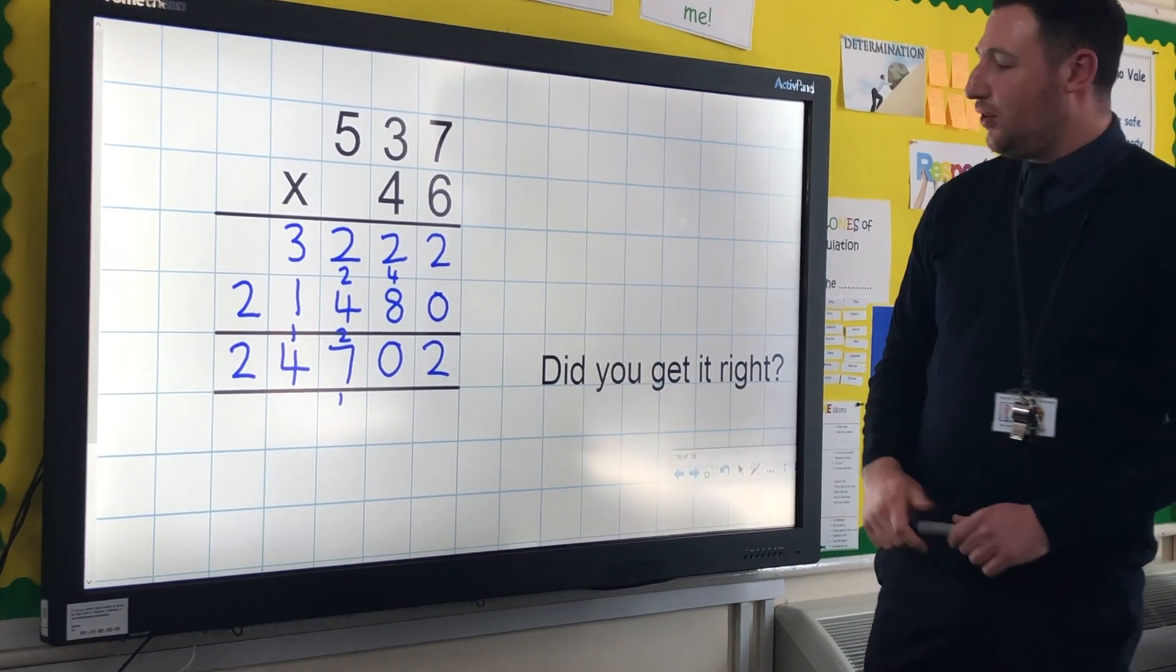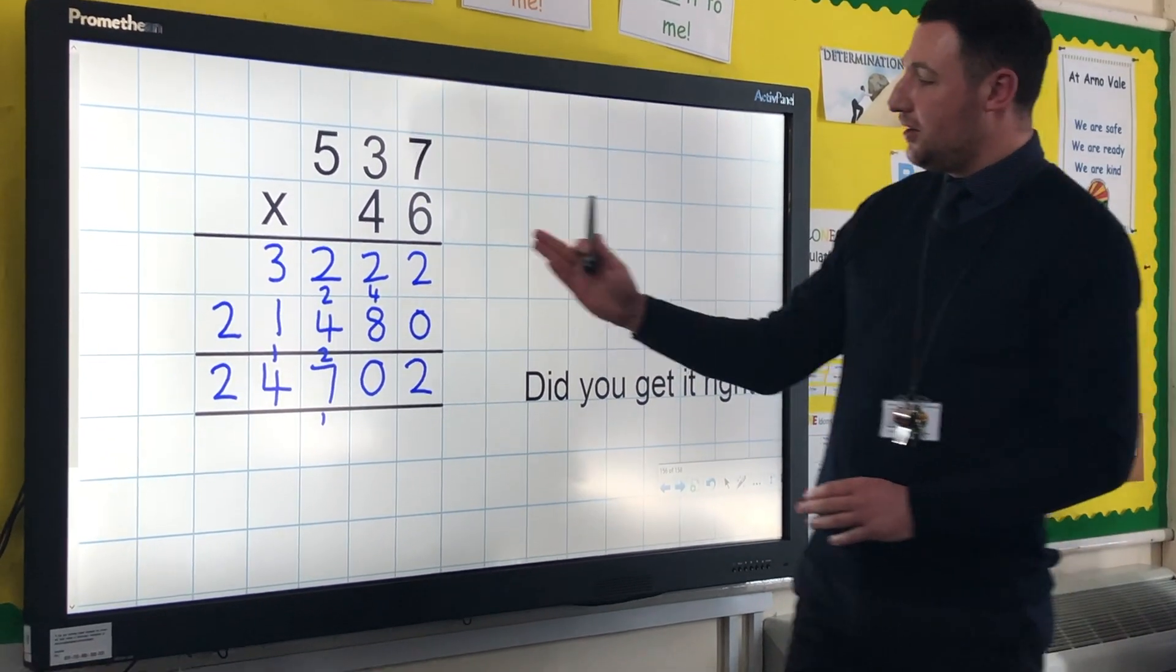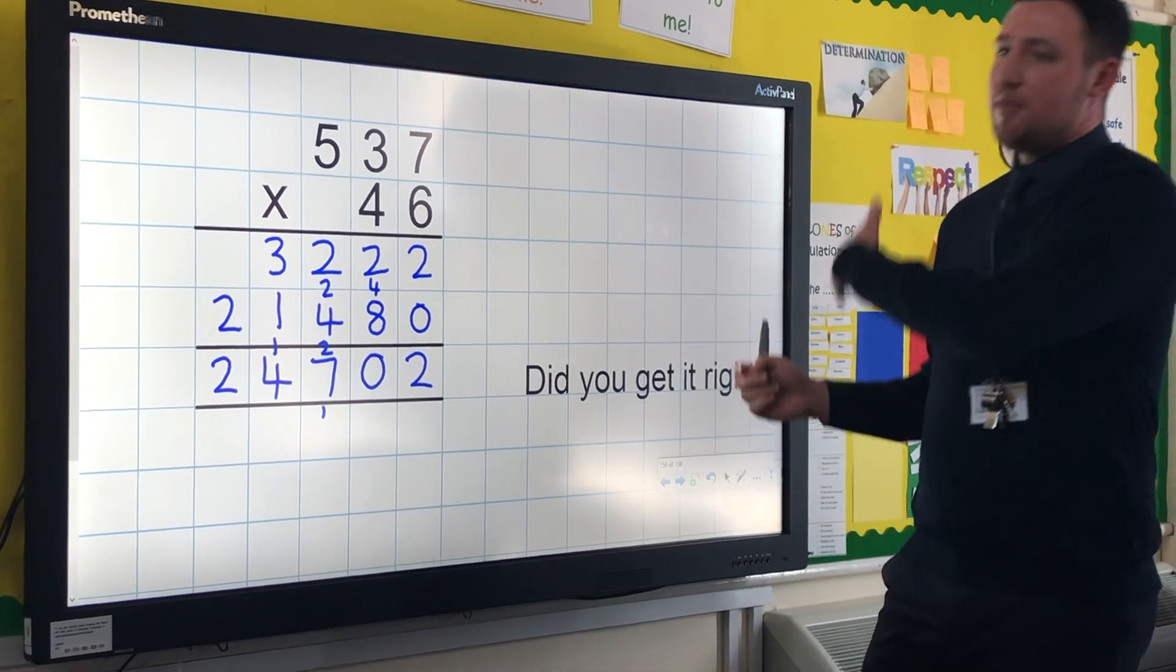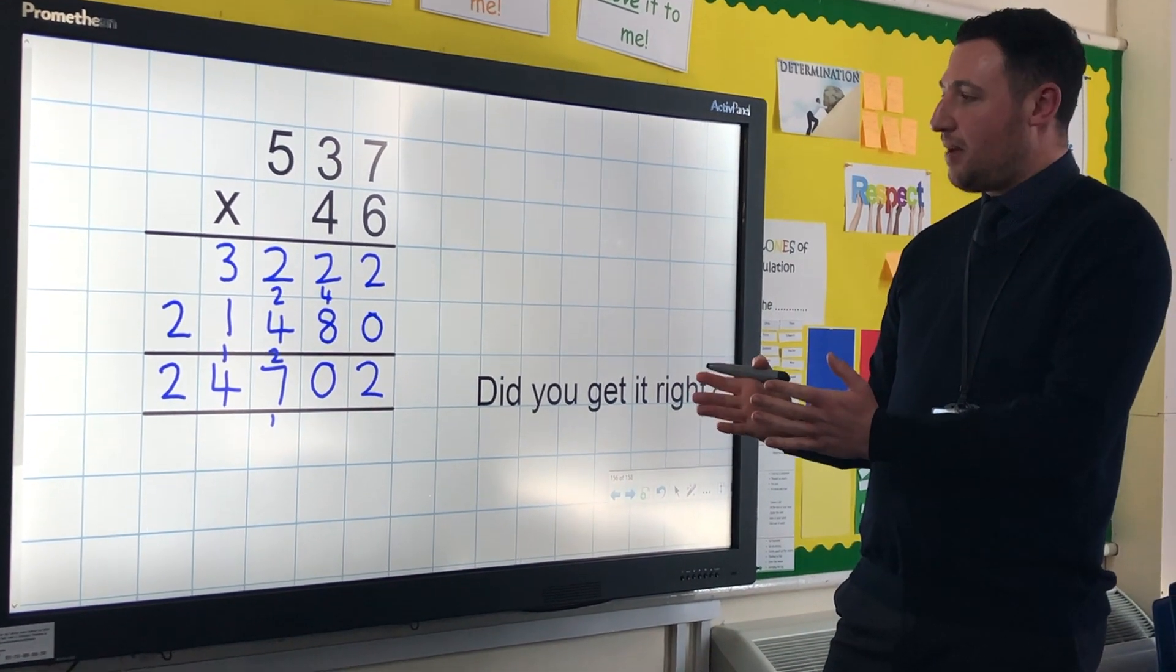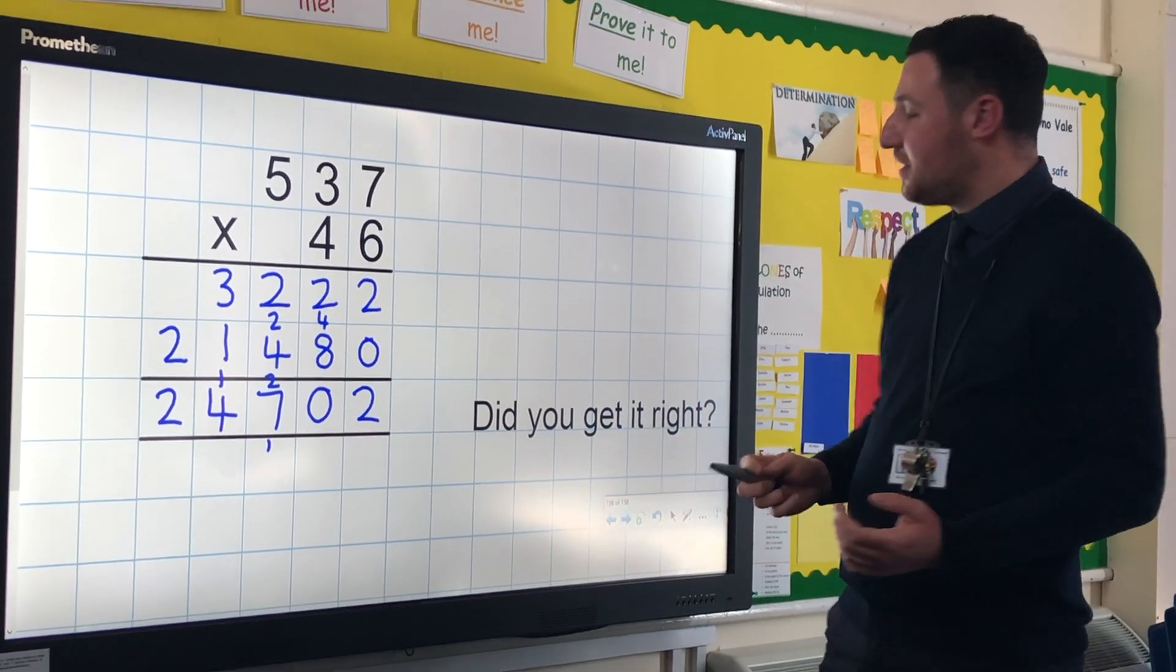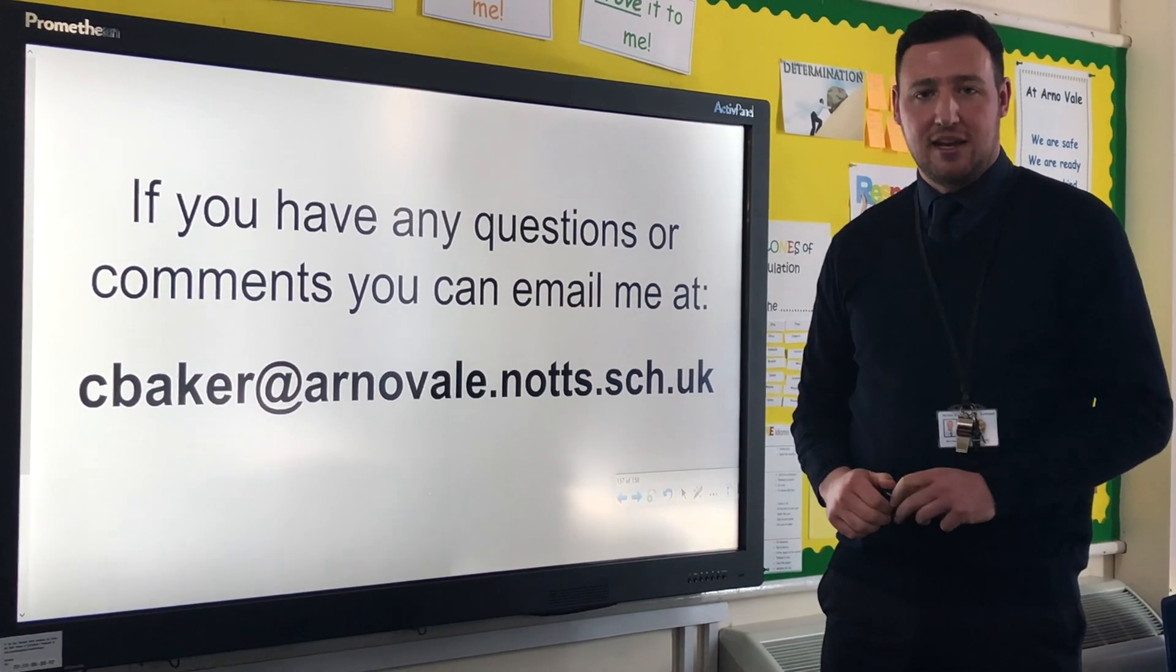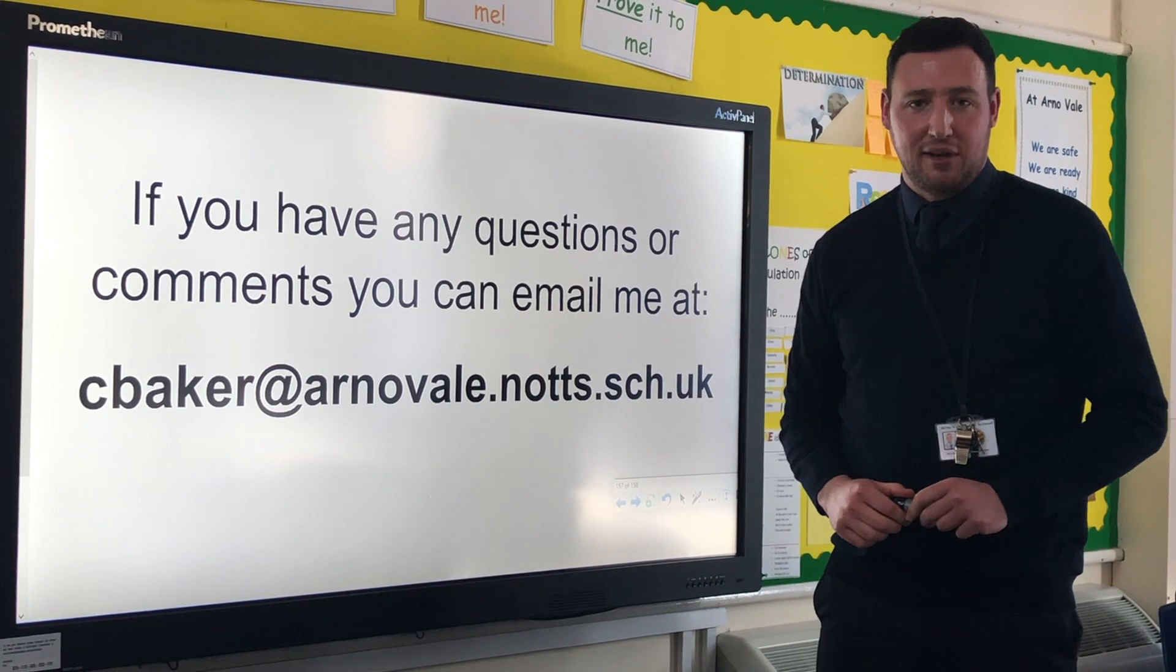So the answer is 24,702. Did you get it right? If so, well done. If not, you can now go back and see what I've done and work out where you went wrong. If at this point your child or you are confused, go back to the previous method, you get really good at the previous method. It's not about rushing through these methods, it's about getting to the end results at the correct time once you've got a thorough understanding of what's come previously. If you've got any questions or comments about that method, you can email me at cbaker@arnaval.notts.sch.uk. And that concludes our tutorials for the multiplication section of our calculations policy.